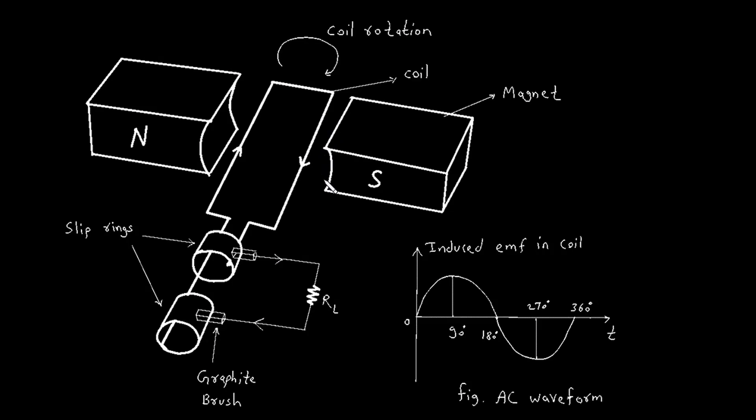The ends of the rotating coil are connected to slip rings. Slip rings are circular metal rings that rotate along with the coil. Graphite brushes are fixed conductors that press against the slip rings. The purpose of the slip rings and brushes is to maintain an electrical connection between the rotating coil and the external circuit without tangling the wires.